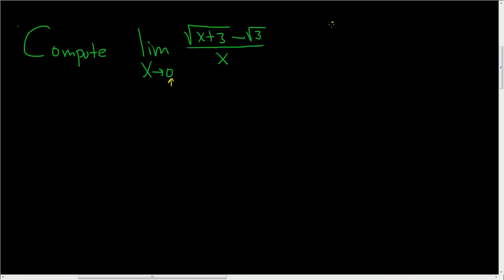So if we do that, we get 0 plus 3, and we have a square root minus the square root of 3 over 0. So that's 0 over 0, and that's undefined. That's no good, so we have to take a different approach.